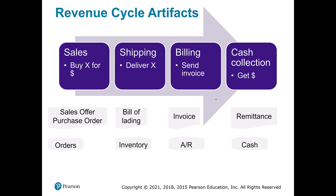Let's say we're selling merchandise for a coffee shop. We have our customer come in and make an order. In that order process we have to decide what exactly they want and for how much — the artifact we have here is something called the sales offer and purchase order. Next we have shipping, where we deliver the coffee to our customer, then we send them an invoice, and eventually we get cash. We'll see things like bills of lading, invoices, and remittances.